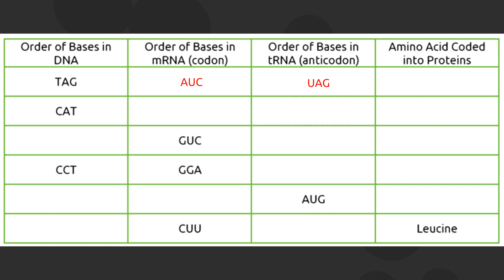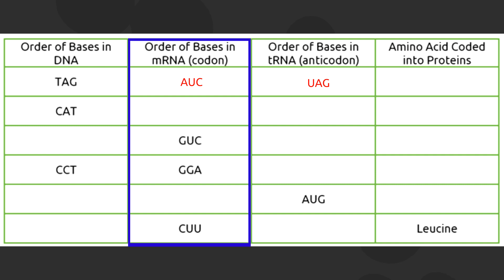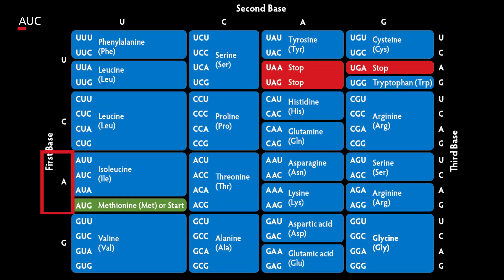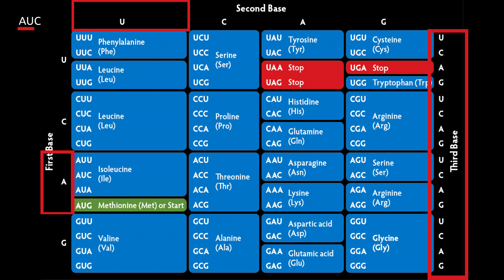Now, how do we know the amino acid coded into proteins? Which of these three orders of bases do we use to find the amino acid? Please take note that it is the mRNA that codes for and copies the information from the DNA, not the tRNA. So we are going to use the mRNA codon to look for the amino acid coded into proteins. In this case, AUC is isoleucine. The first letter is A — look for A on the left side of the genetic code table. Find the second letter U on the second letter column, and the third letter C on the rightmost column. That is why we find isoleucine.